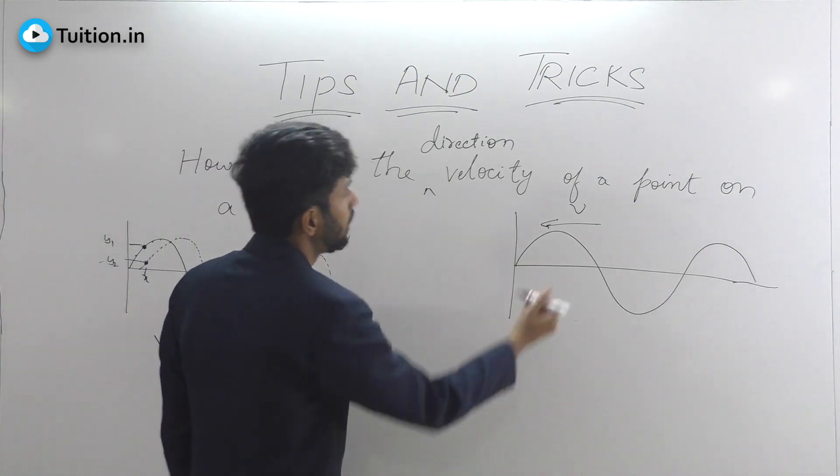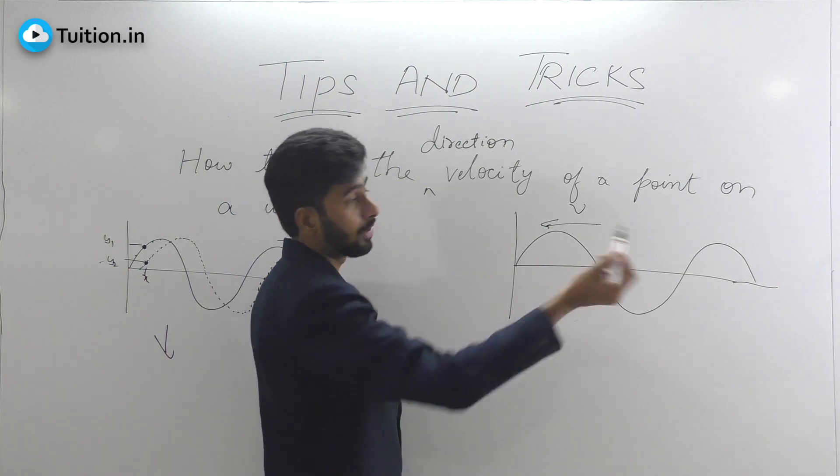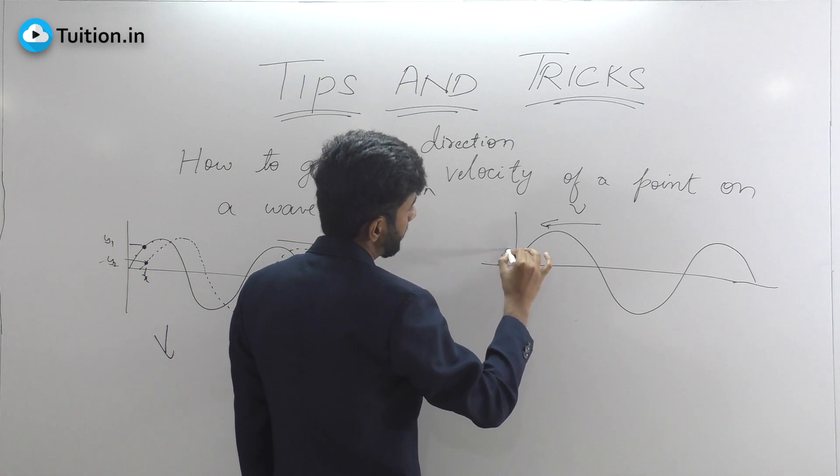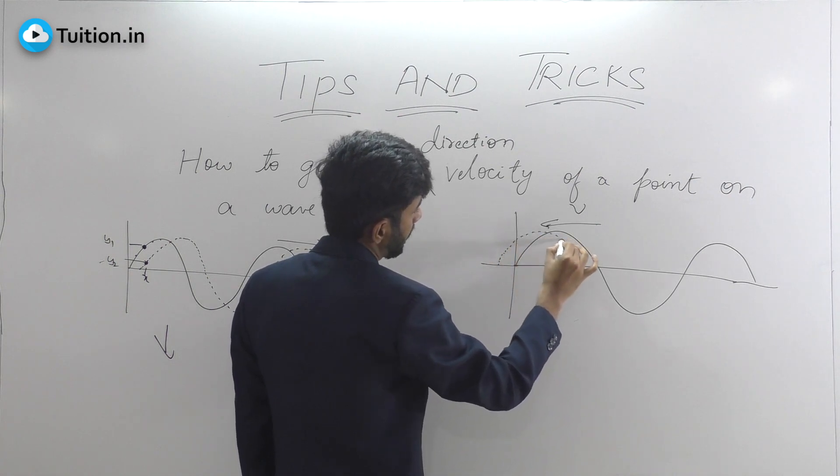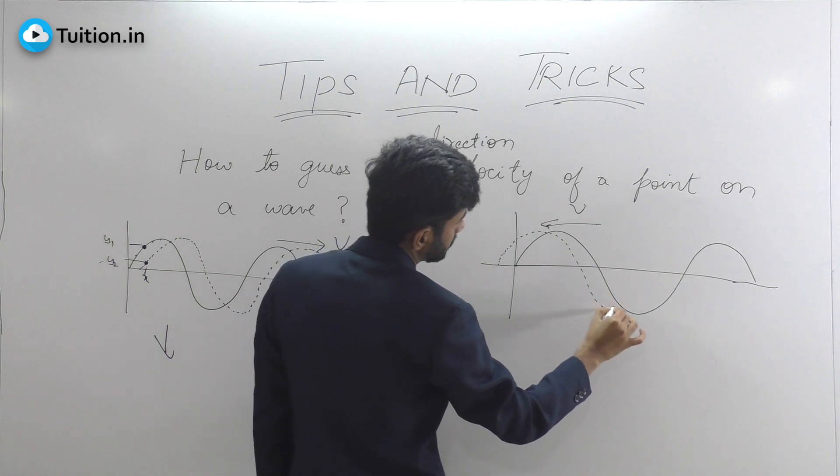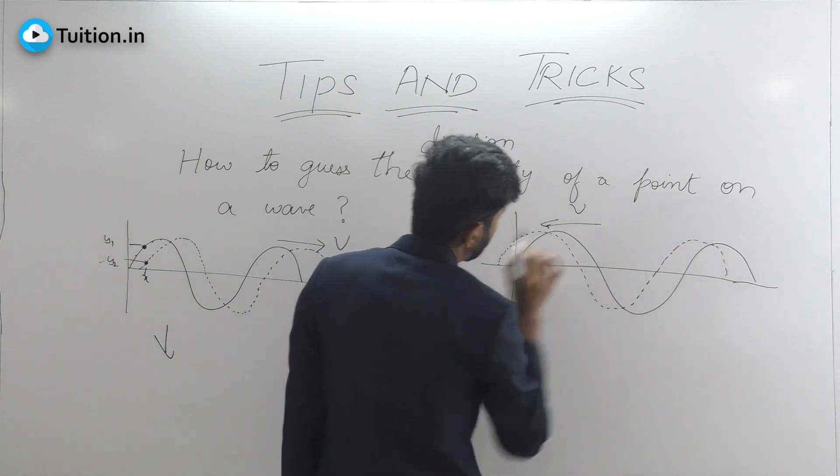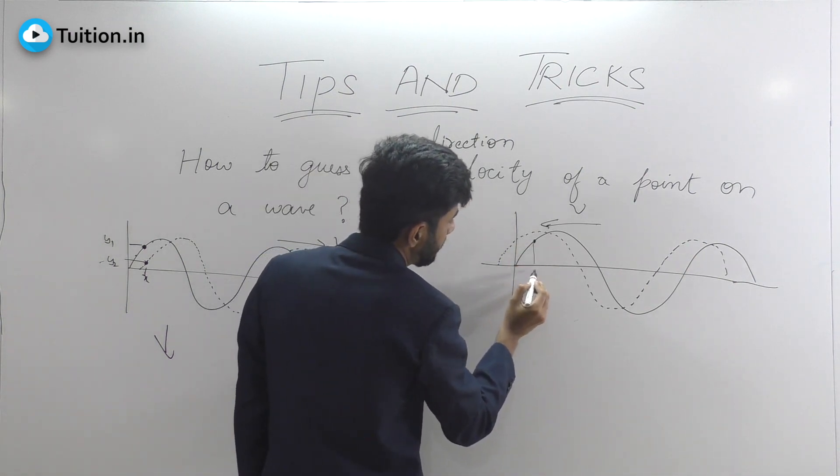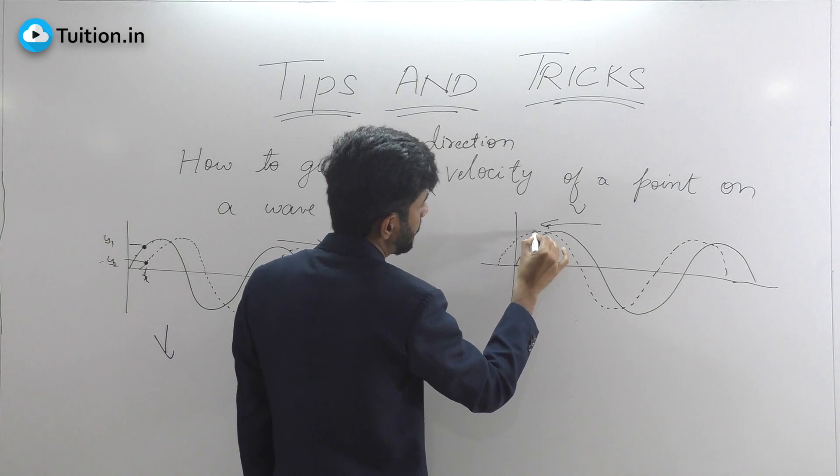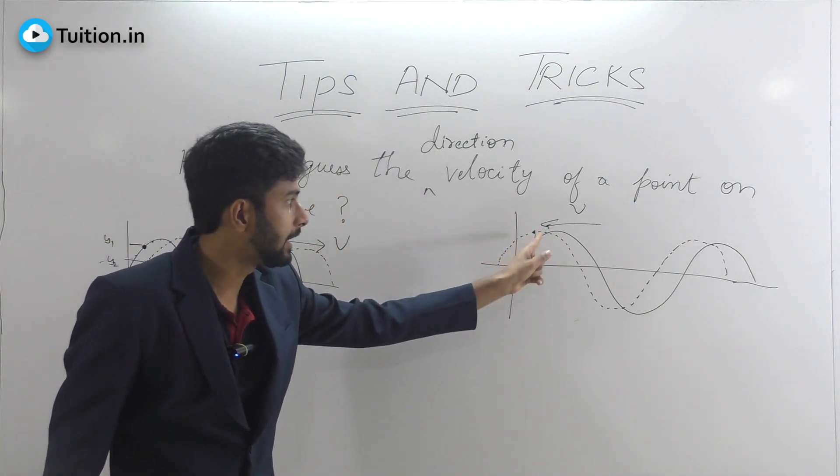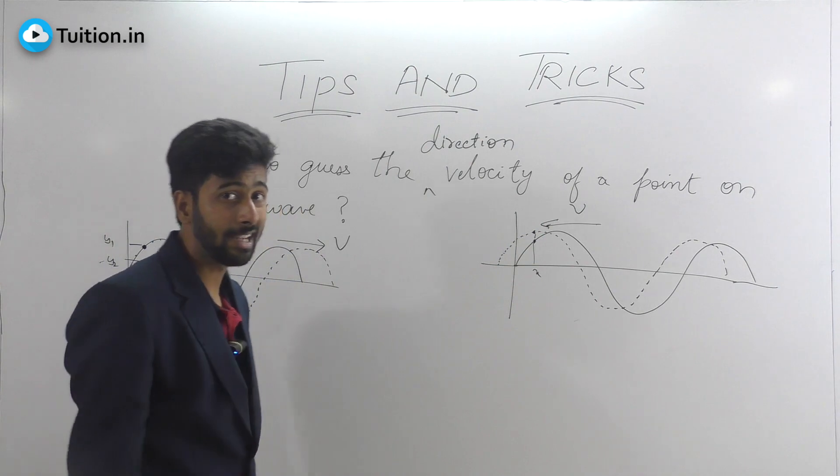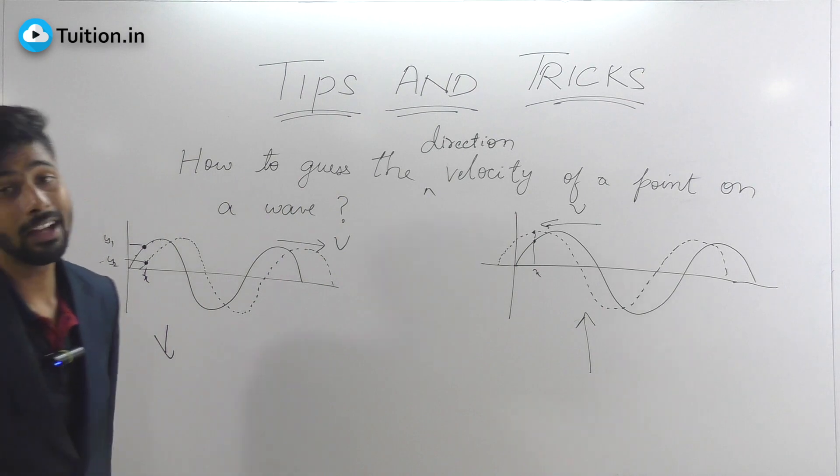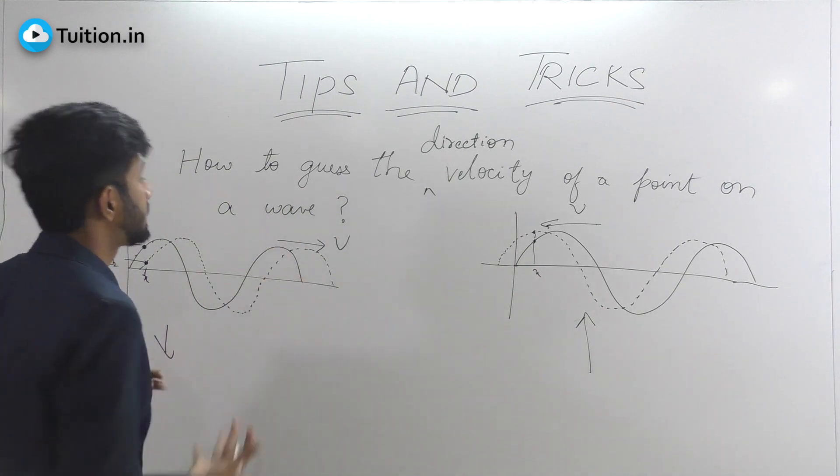Let's look at that particular case now. Your wave is moving that side. How do I draw the wave after some time? It will look something like this. If I look at this particular point and if I need its velocity, assuming the x to be same, this point will now shift upwards. It will now go upwards because after some time, it will be on that particular position. That means your point's velocity in this case was upwards. So this is how you can intuitively guess or actually verify the direction of velocity.